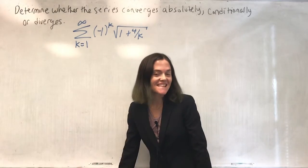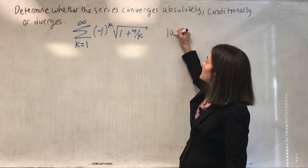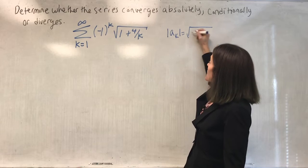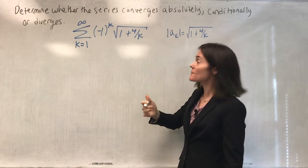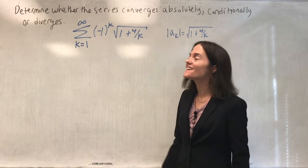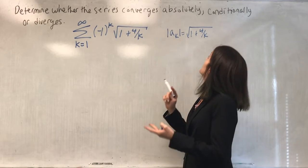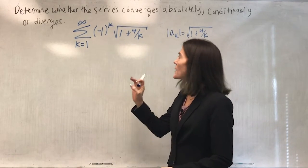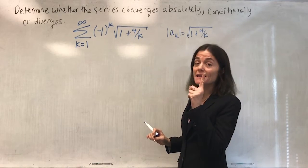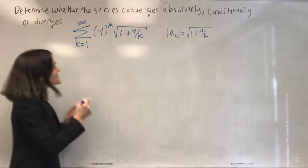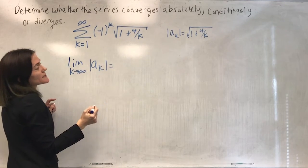This is another alternating series, because the absolute value of each term alternates in sign between plus and minus. Now we have to decide: converges absolutely, converges conditionally, or diverges? Again, briefly look at the terms — see if they go to zero. Don't let the (-1)^k fool you. Look at the limit as k goes to infinity of |a_k|. As k goes to infinity, since square root is continuous, you can bring the limit underneath: 4/k goes to zero, so you get the square root of 1, which is 1.